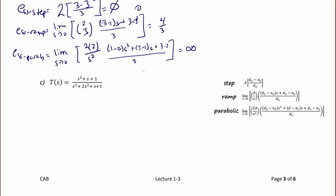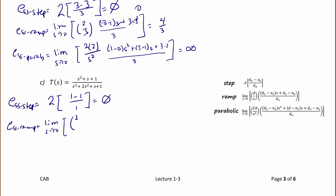The final example: T(s) = (s² + s + 1). For a step, we have 2 times (d0 - n0) / d0 = 2 times (1 - 1) / 1 = 0, so it tracks a step with zero steady state error. For a ramp, the limit as s goes to 0 of (2/s) times [(d1 - n1)·s + (d0 - n0)] / d0 = [(1 - 1)·s + (1 - 1)] / 1. The s cancels out and (1 - 1) = 0, so it tracks a ramp with a steady state error of 0.